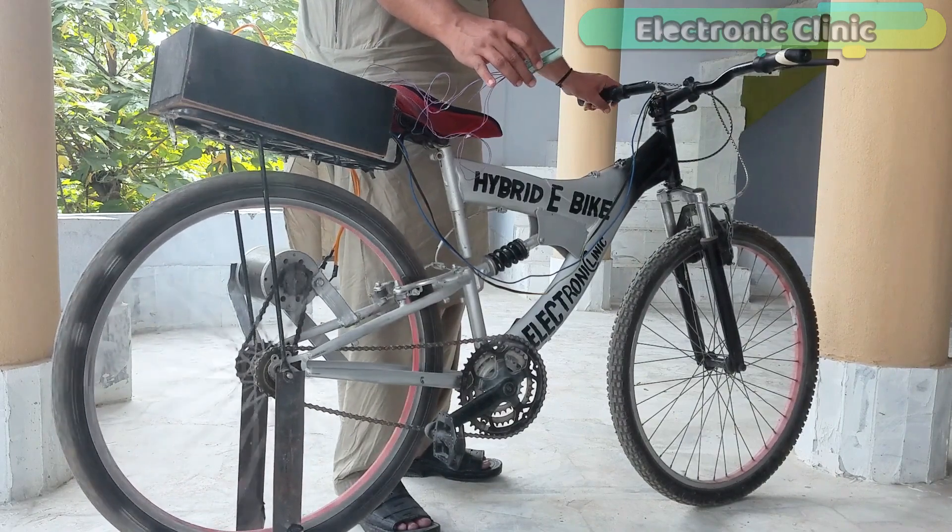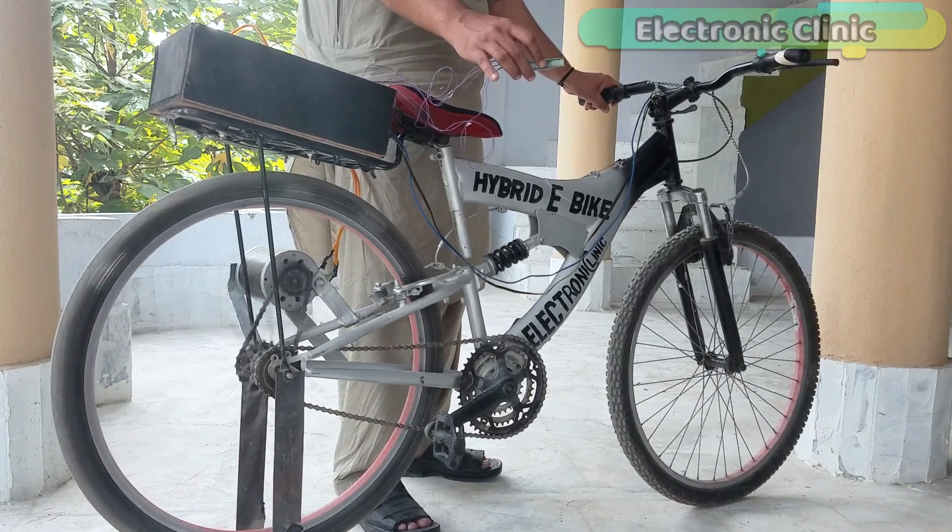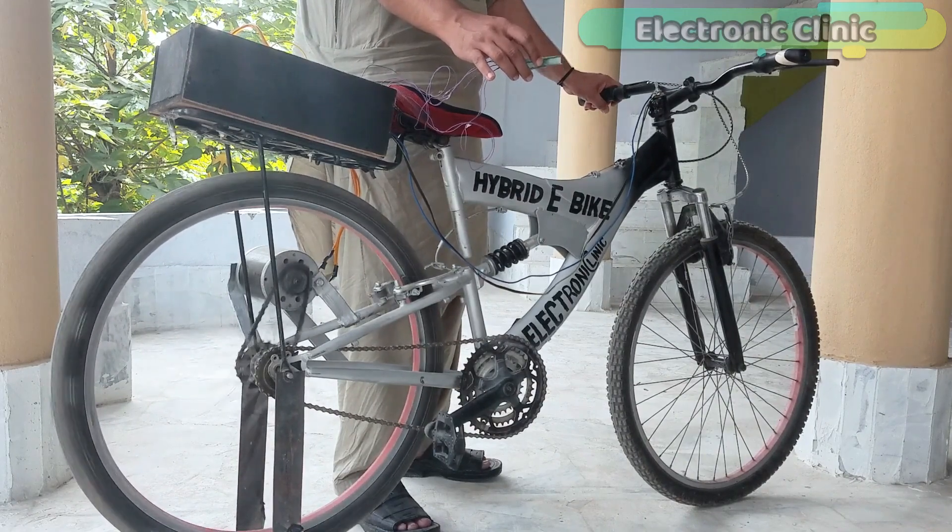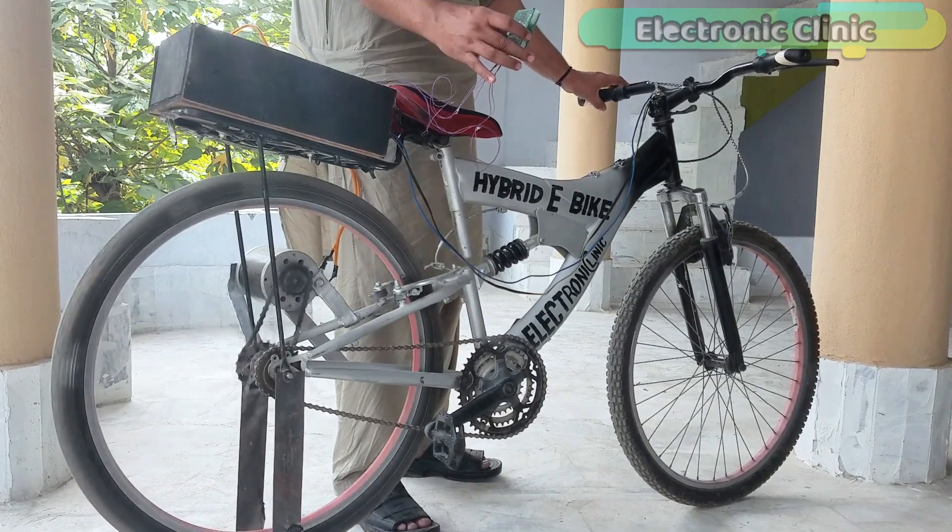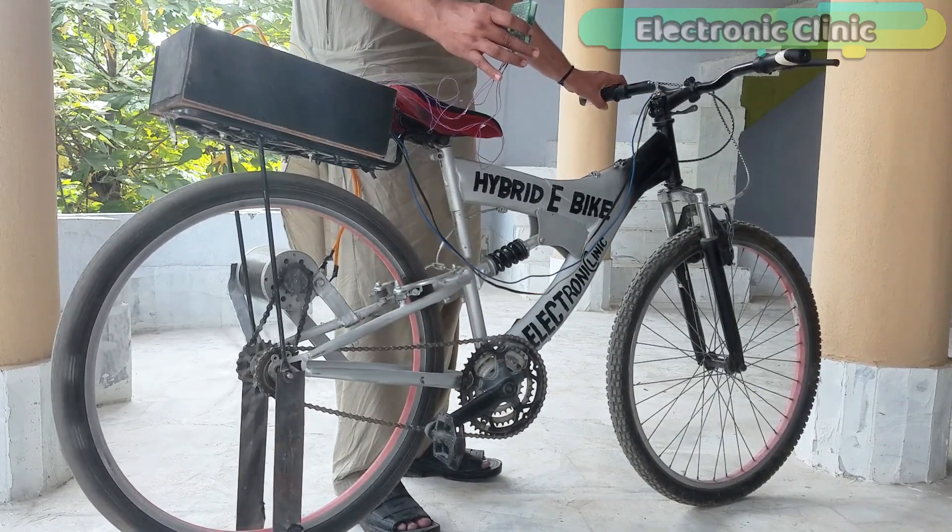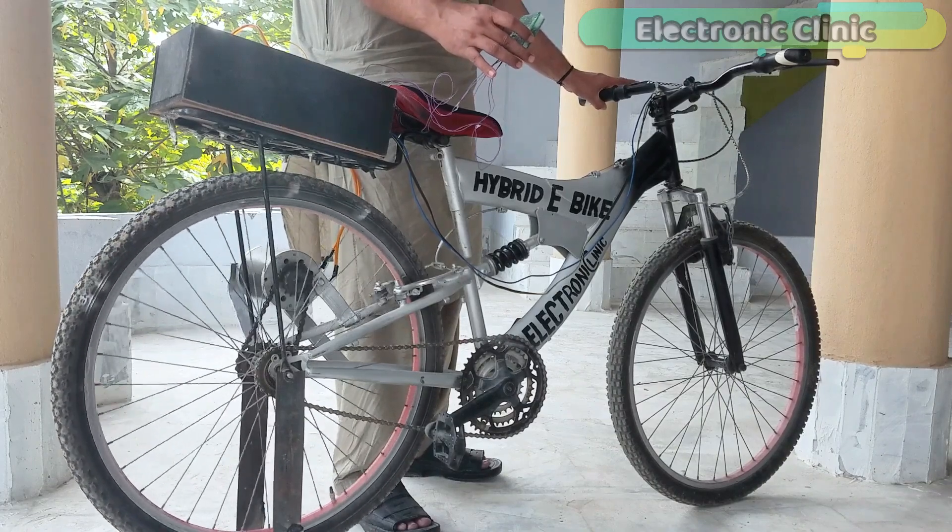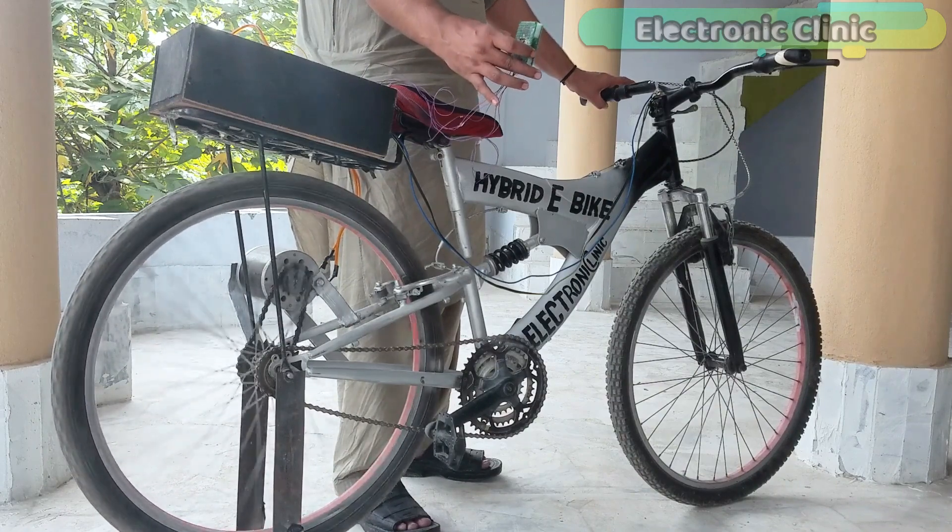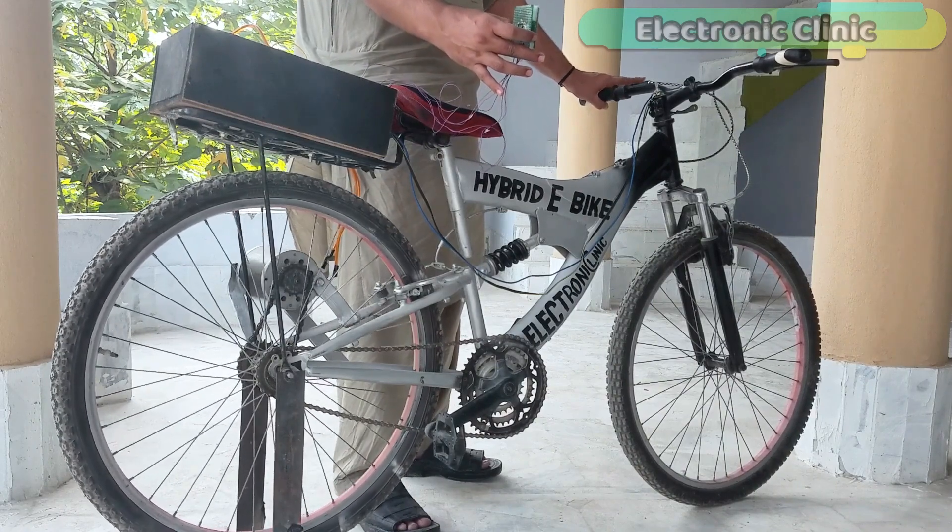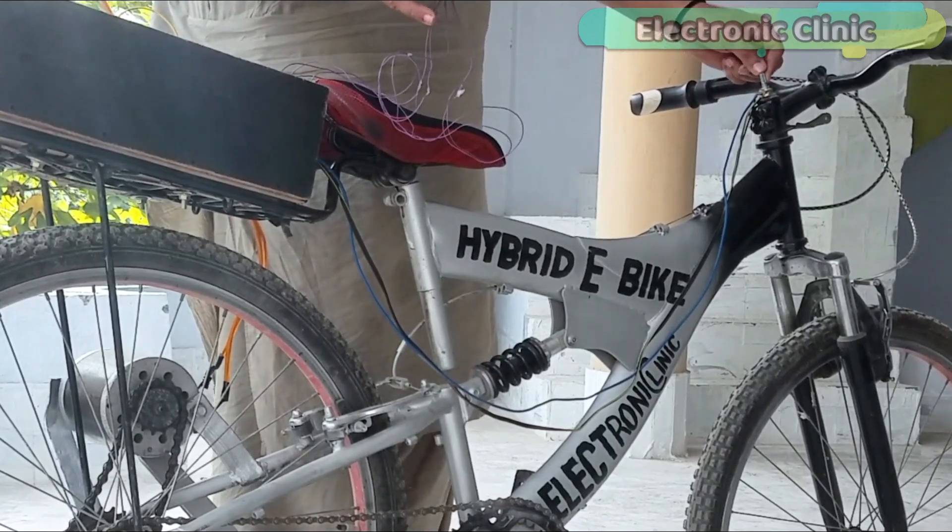In today's episode, which is part 3 of the hybrid electric bike, we are going to control the speed of the electric bike automatically using the GY-521 MPU6050 6 degrees of freedom 3-axis gyroscope and accelerometer module. The MPU6050 module can be fixed on the helmet or on the jacket and then depending on the angle, the speed can be increased or decreased automatically.